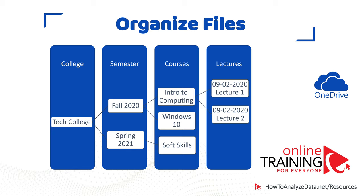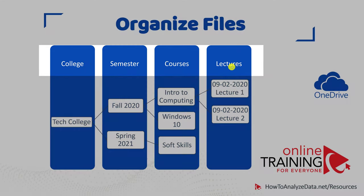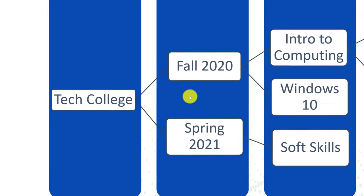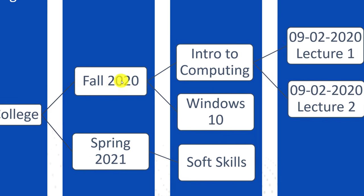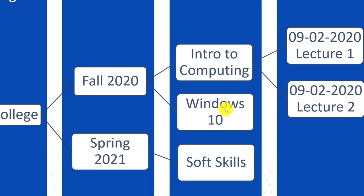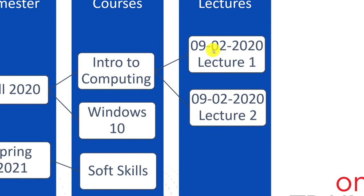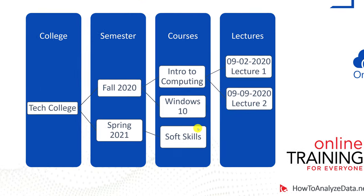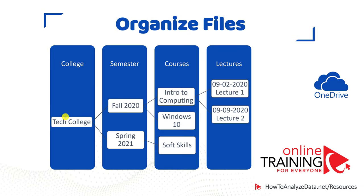The smart way to organize data in OneDrive is using a hierarchical structure. For example, as a student you might organize it in four tiers: college, semester, courses, and lectures. You might be taking classes at a technical college with two semesters — fall 2020 and spring 2021 — and two courses in fall 2020: Introduction to Computing and Windows 10. Introduction to Computing has two lectures, one on September 2nd and one on September 9th. In spring 2021, you have one class called Soft Skills.